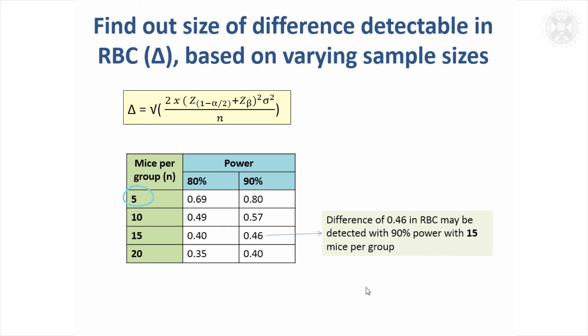If we go up to 20 mice, we can do a lot more. We can detect a difference of 0.35, so the study becomes more powerful.